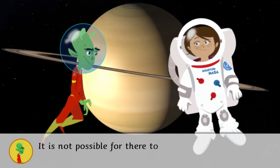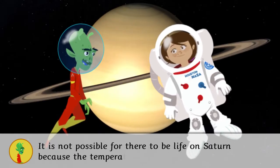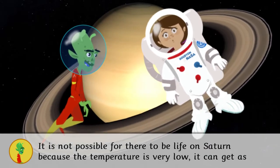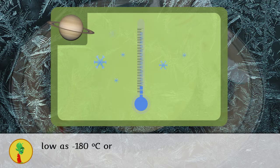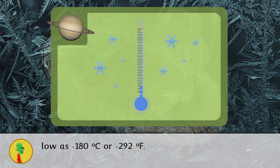It is not possible for there to be life on Saturn because the temperature is very low. It can get as low as minus 180 degrees Celsius or minus 292 Fahrenheit.